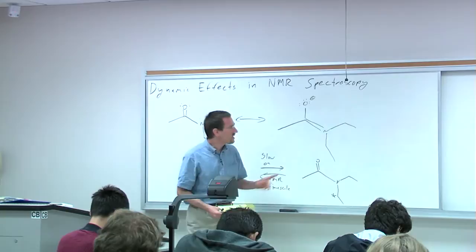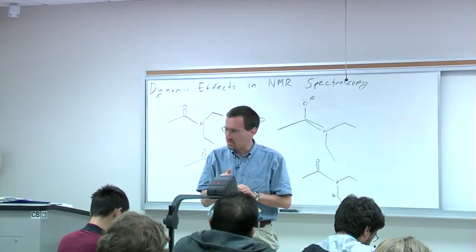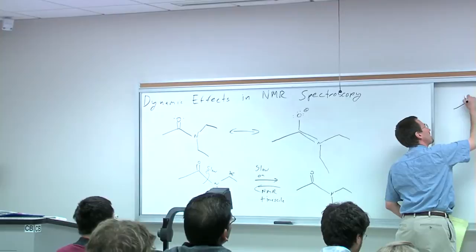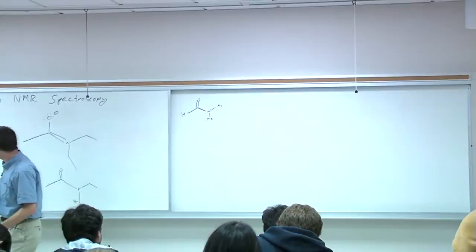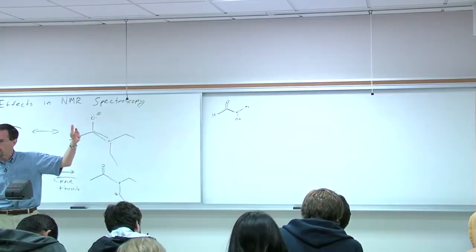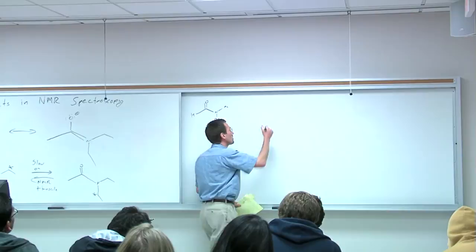Now if you think about this, let's take a simpler situation. The case that people invariably use for didactic purposes is something with singlets. The classic case was dimethyl formamide, just because it's easy to think about and easy to simulate. With methyl groups you have singlets, and just like the ethyl groups where one is more downfield — the one that's cis to the carbonyl is more downfield, the one that's trans from the carbonyl is more upfield — you have the same with the methyl groups here.